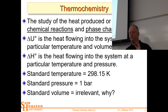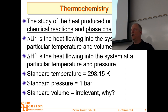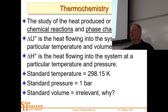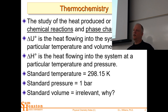Thermochemistry focuses on the heat produced or required by chemical reactions and phase changes. The chemical reaction we write is the system. If heat is generated by that reaction, it's lost to the surroundings, so it's negative — that's what we mean by exothermic. If delta H for a reaction is negative, the heat was lost by the system and went into the surroundings.